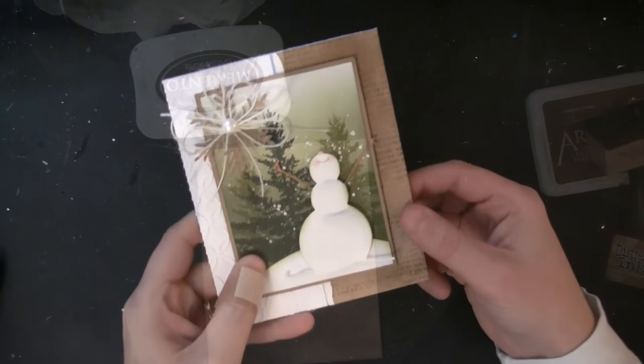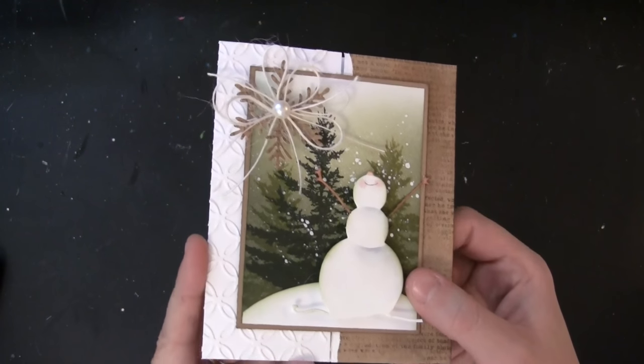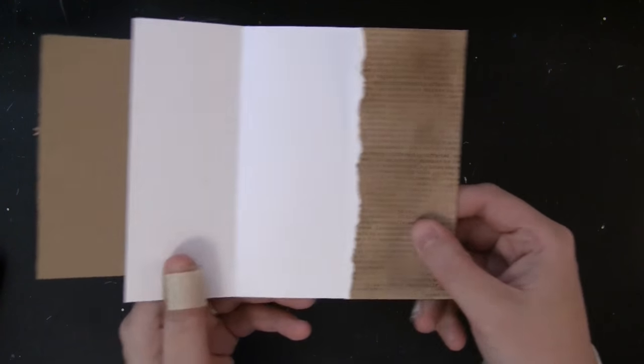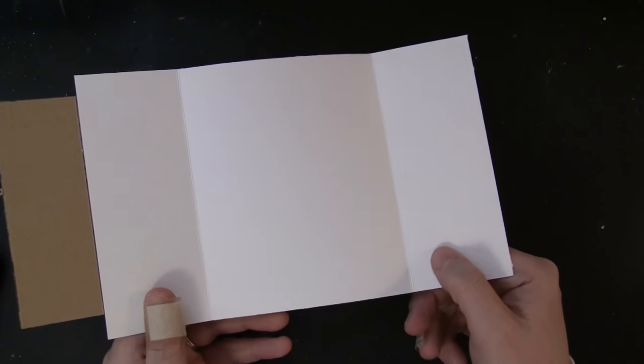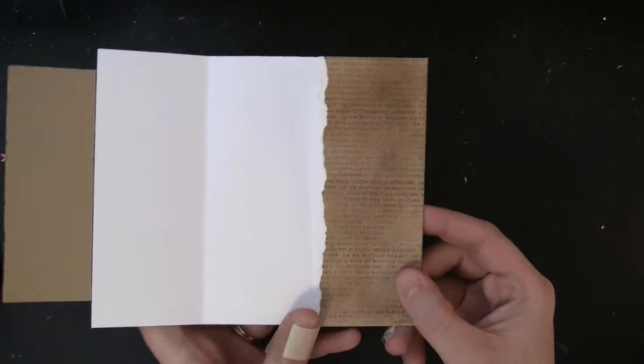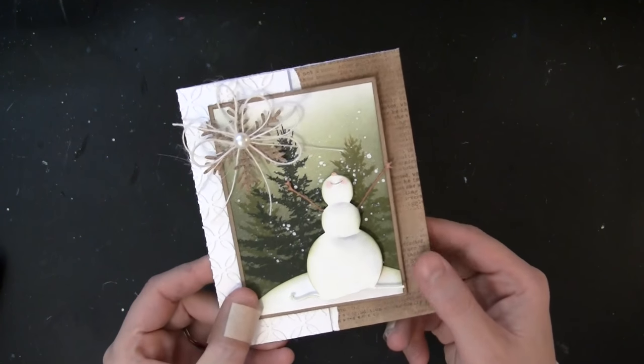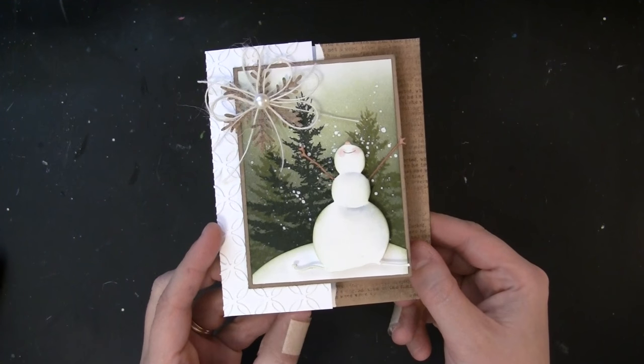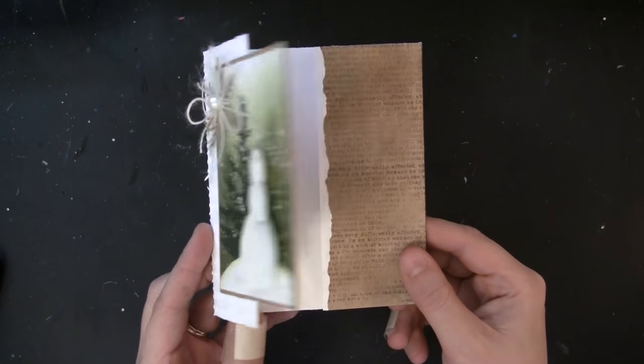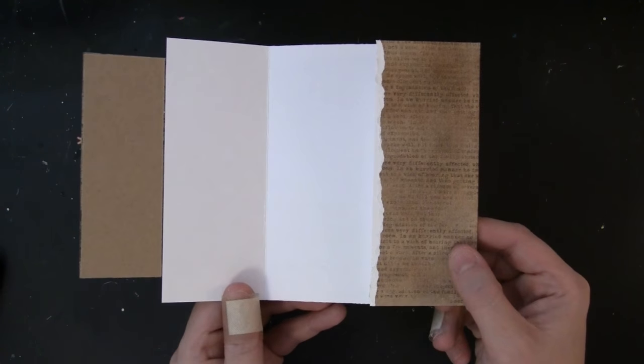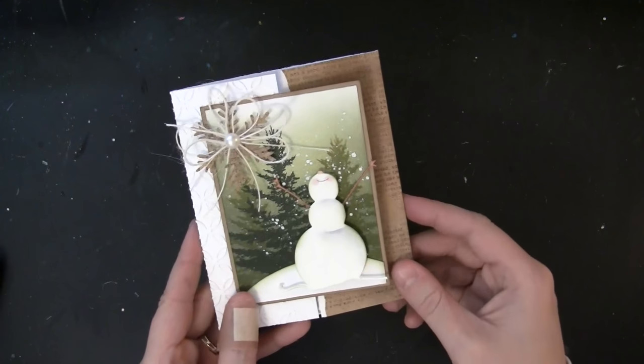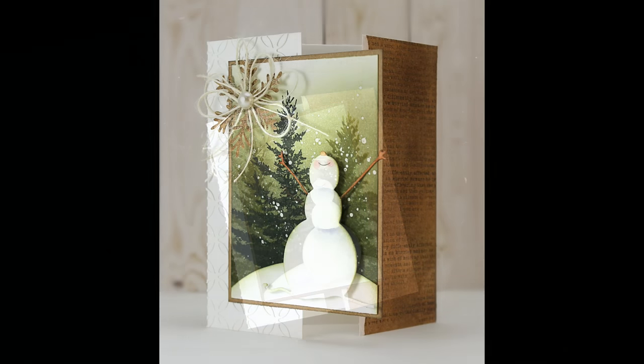So here's just a look at the finished card. I took that stamped panel that I made, I tore it along one edge and added it to one side of the gatefold card. On the other side, I added the interlocking creative die in white, and then I mounted that snowman panel just by applying adhesive on the left-hand side of the panel and then gluing it down onto the left-hand side of the gatefold card base.